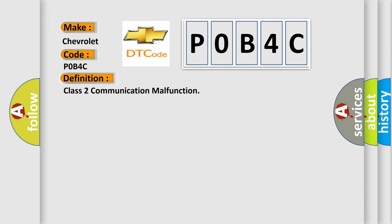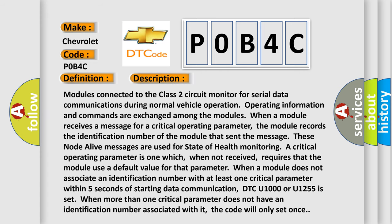Here is a short description of this DTC code. Modules connected to the Class 2 circuit monitor for serial data communications during normal vehicle operation — operating information and commands are exchanged among the modules. When a module receives a message for a critical operating parameter, it records the identification number of the module that sent the message. These node alive messages are used for state of health monitoring. A critical operating parameter is one which, when not received, requires the module to use a default value. When a module does not associate an identification number with at least one critical parameter within five seconds of starting data communication, DTC U1000 or U1255 is set. When more than one critical parameter does not have an identification number associated with it, the code will only set once.